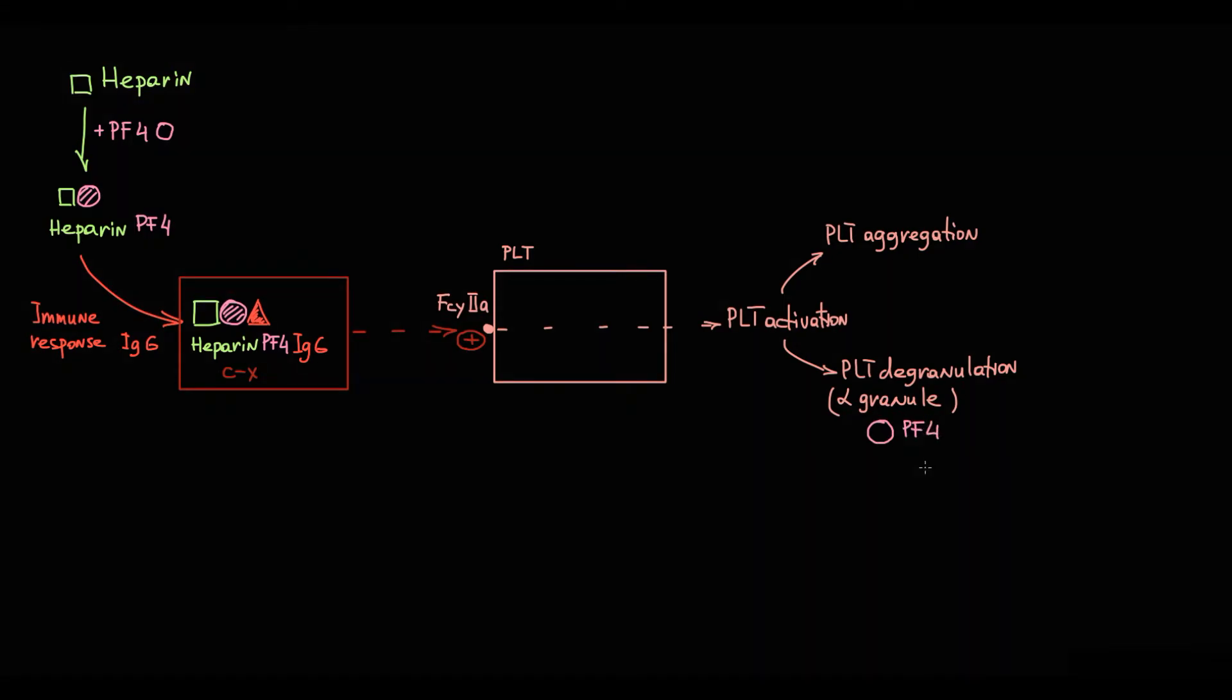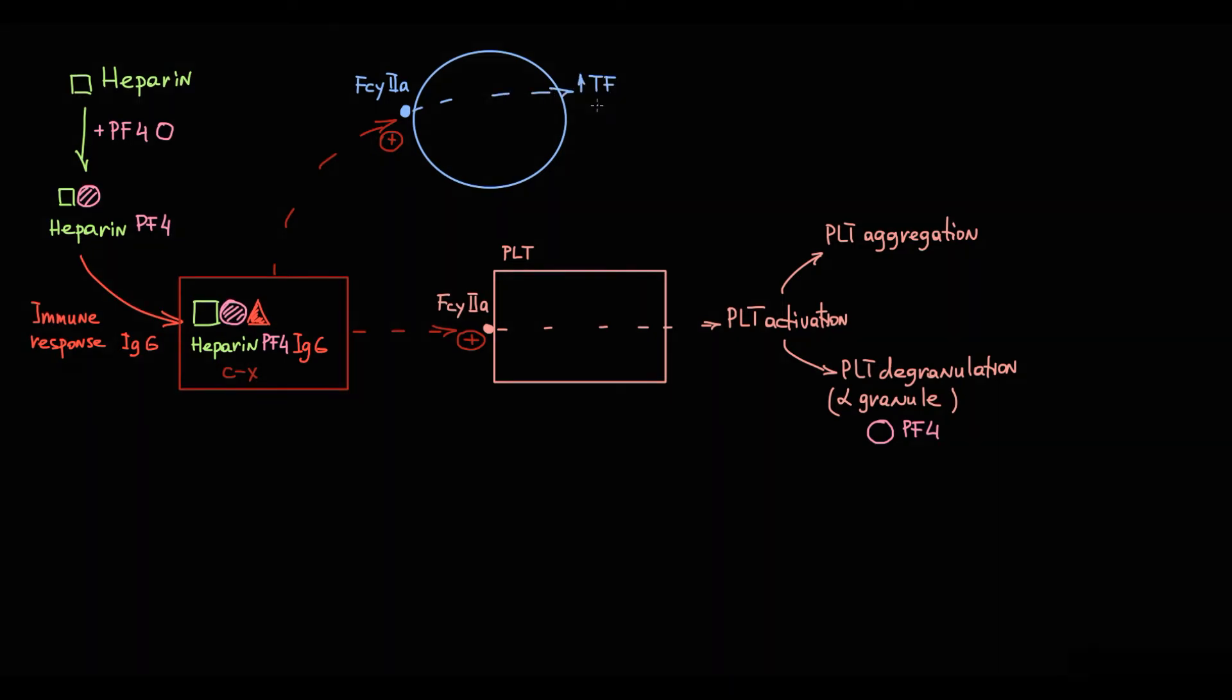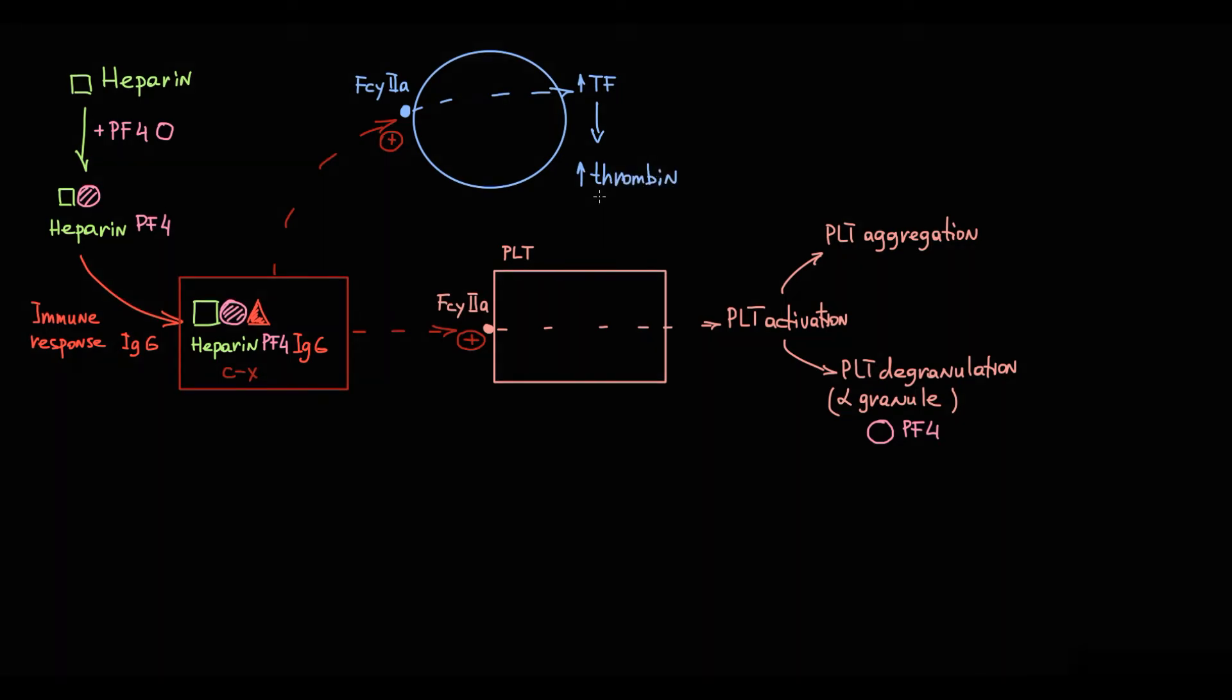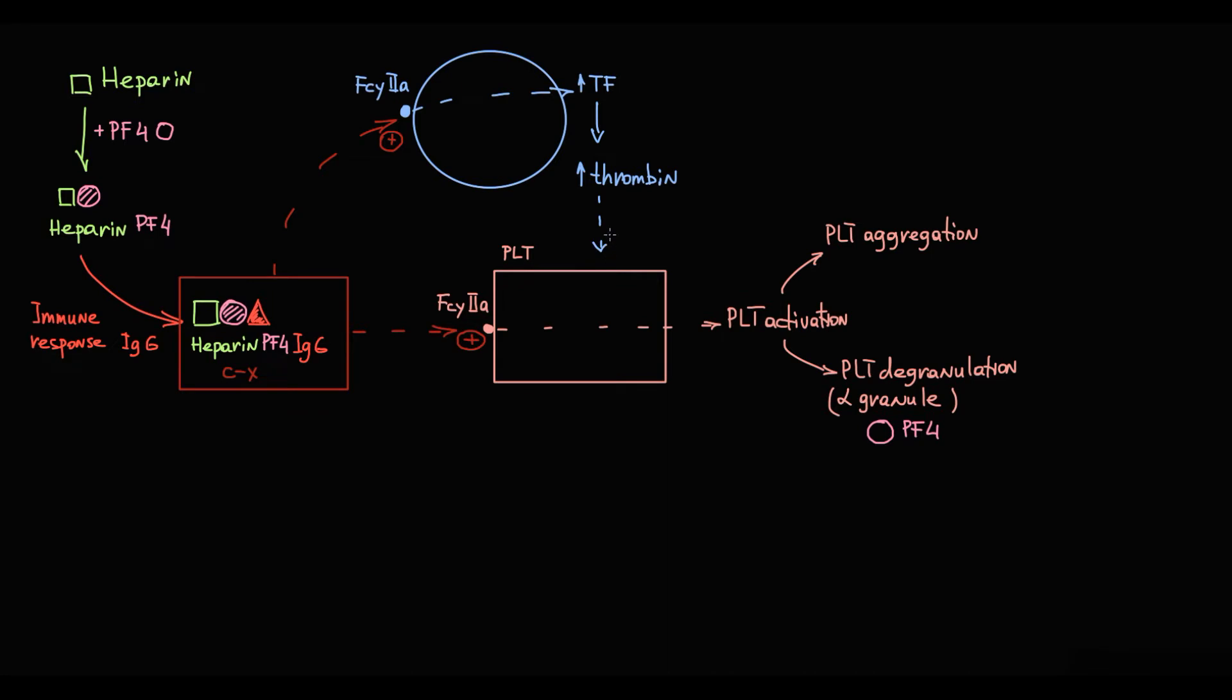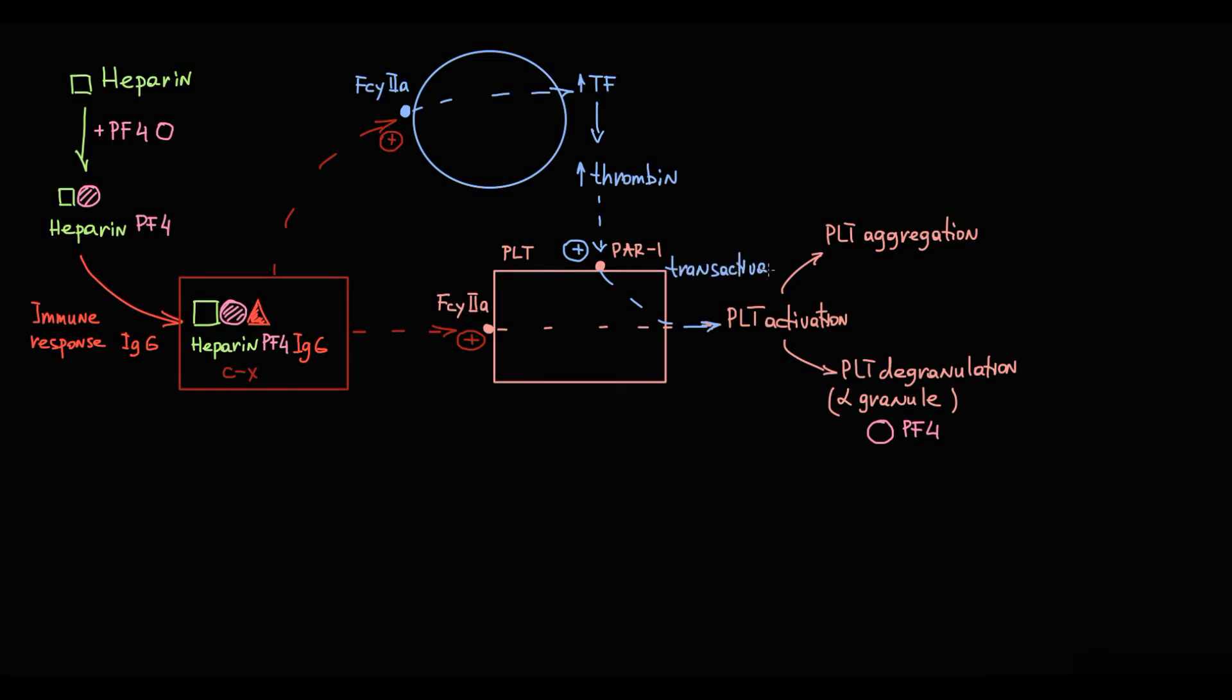It creates a vicious cycle where immunogenic complexes stimulate platelet factor IV secretion, and in turn, platelet factor IV molecules provoke formation of new immunogenic complexes. Antigen-antibody complexes also bind to Fc-gamma-2A receptor on monocytes. In response, monocytes increase expression of tissue factor on their surface, and this results in increasing production of monocyte-derived thrombin. Increasing thrombin concentration activates protease-activated receptor 1, which serves as signal for platelet activation. Basically, monocytes transactivate platelets.